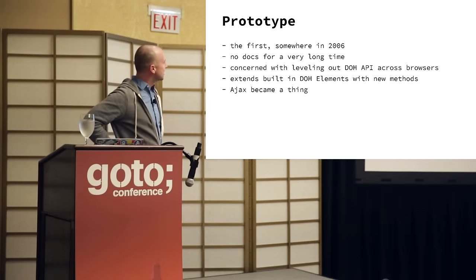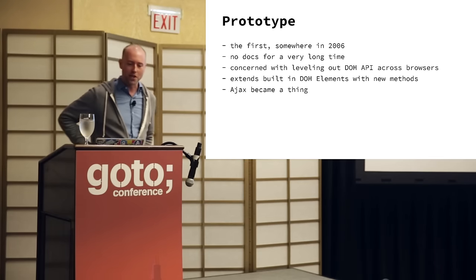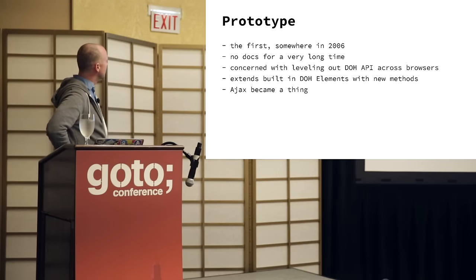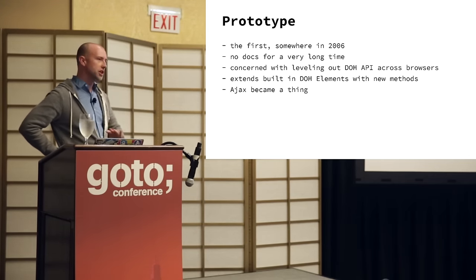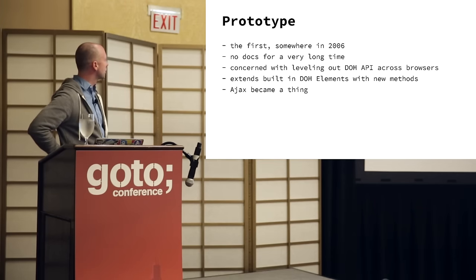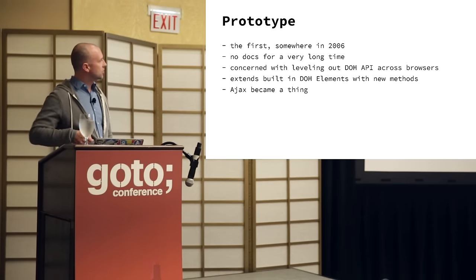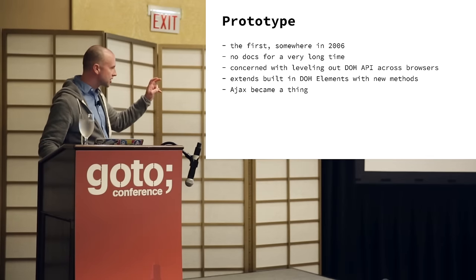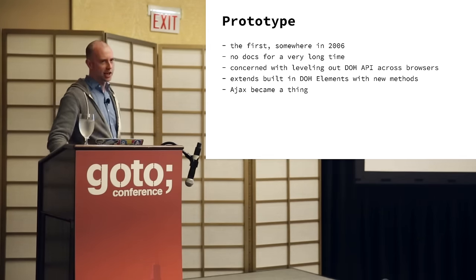So around 2006, a library called Prototype came out. It had no docs whatsoever, and everybody kind of just got up to speed with it by reading the source code. It mostly painted over those differences in DOM implementations across browsers. It also made life a little bit easier for working with remoting, and the term AJAX got coined — it used to be all caps AJAX, but that became uncool to do.